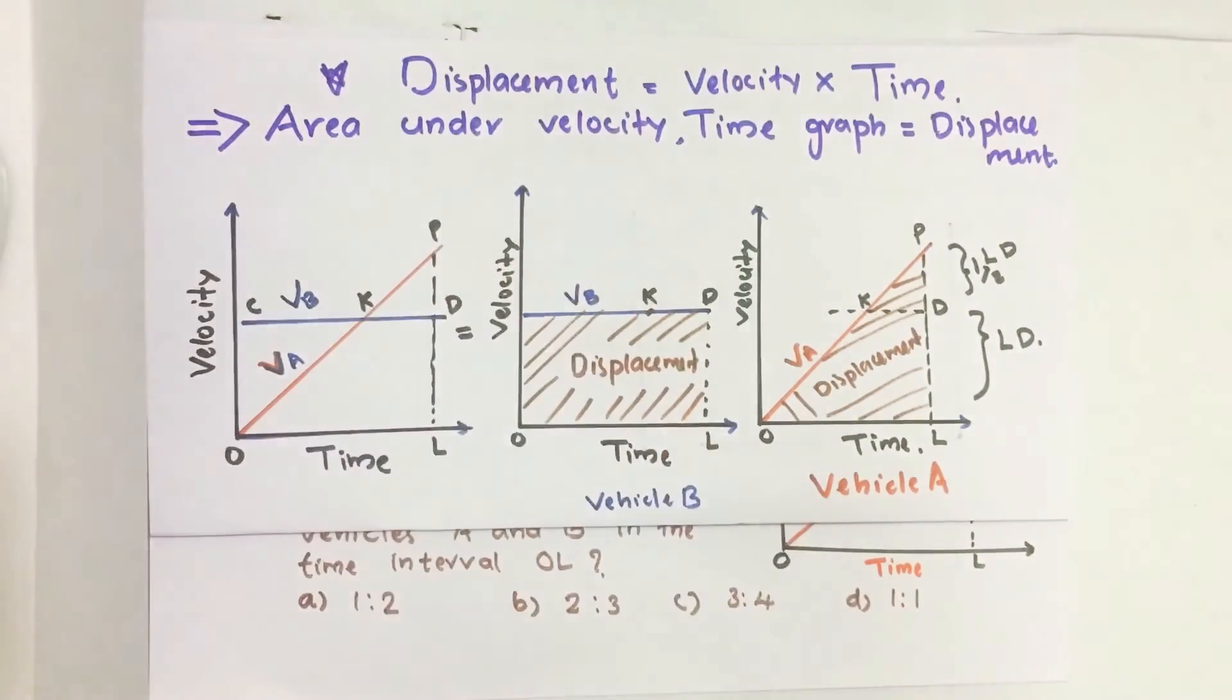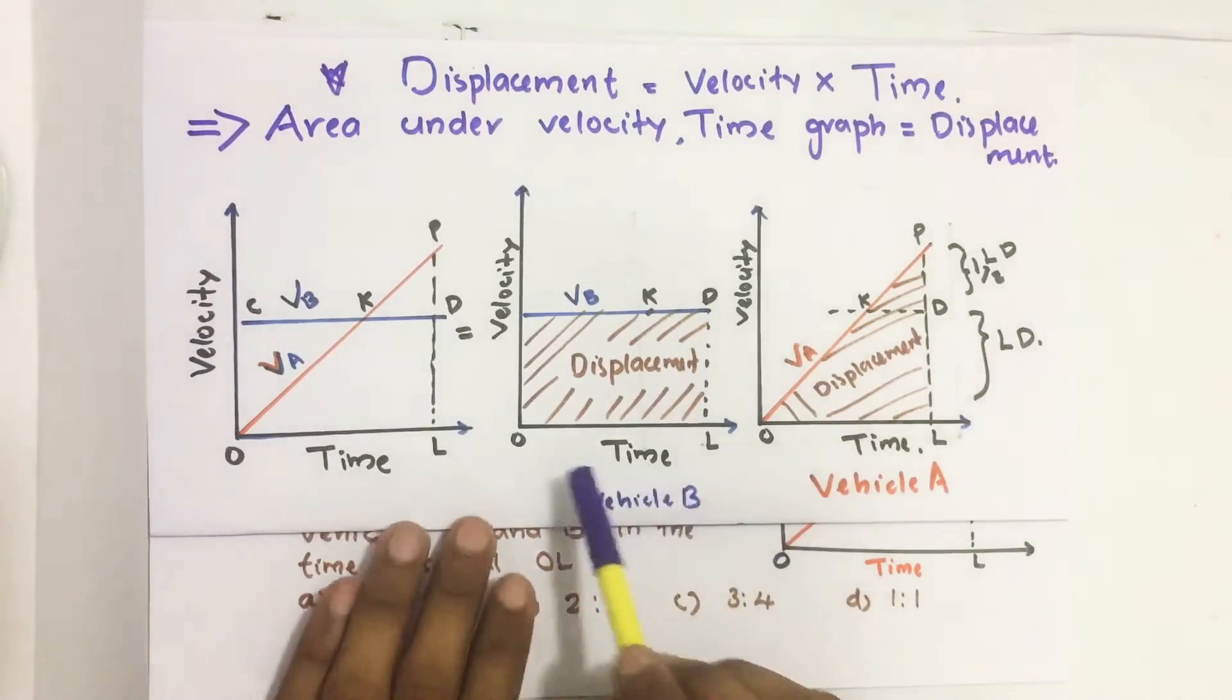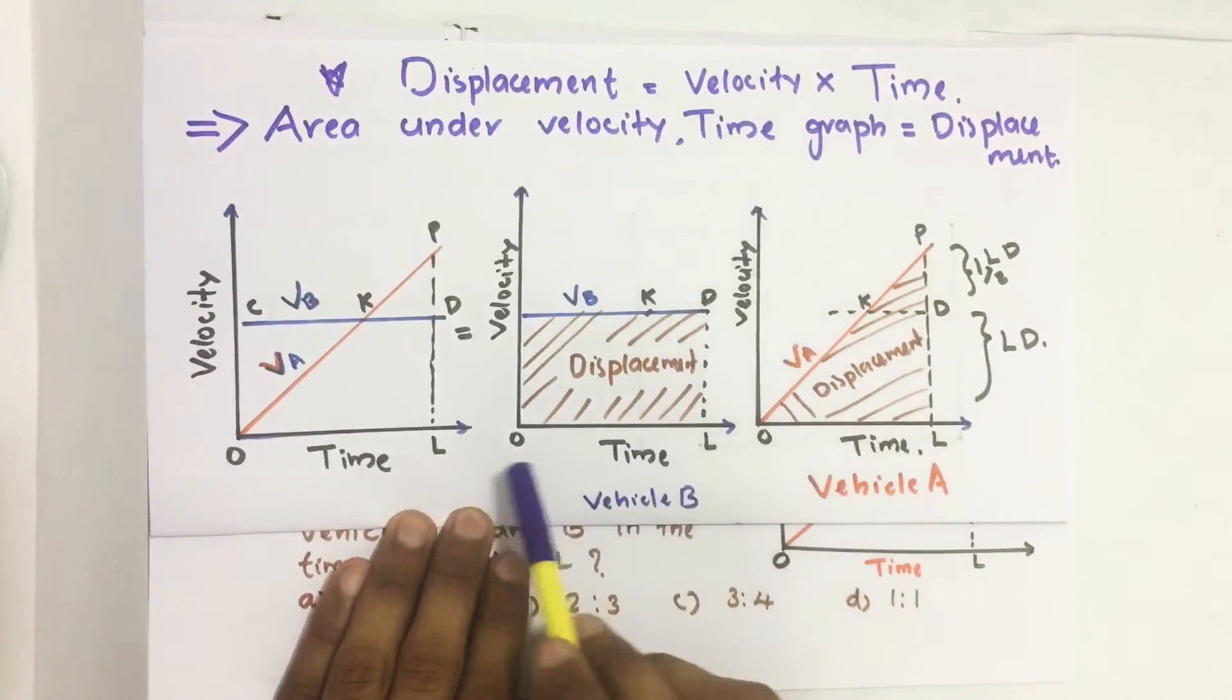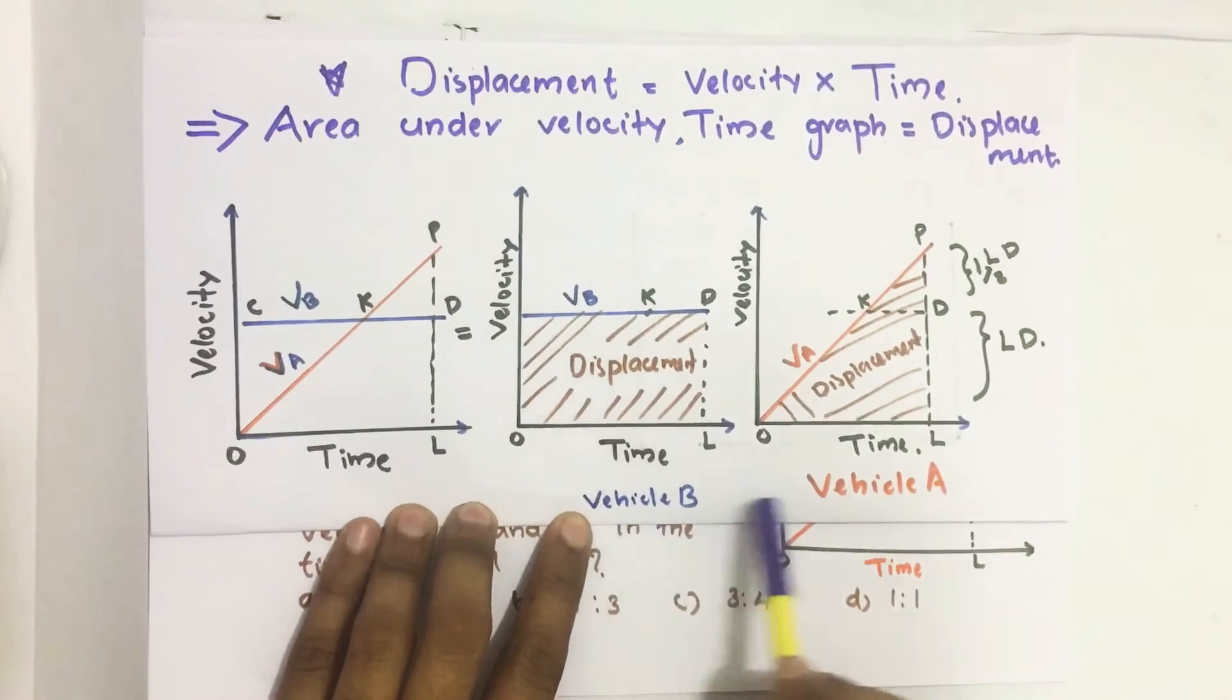The velocity time graph given here is a combined graph for vehicle A and vehicle B. For better understanding, I split the graph into two - one for vehicle B and one for vehicle A.